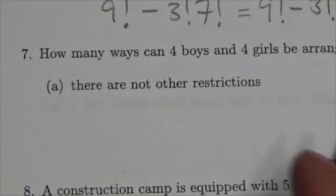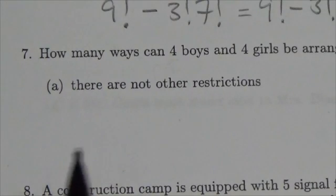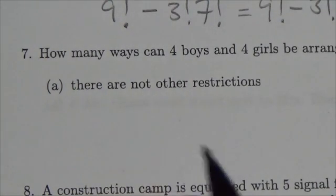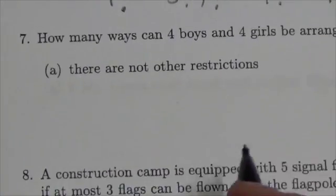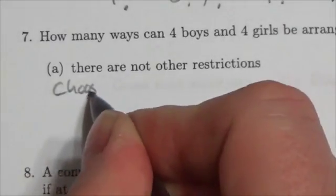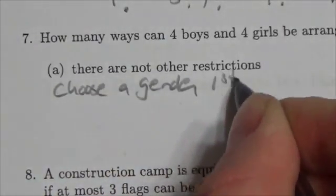Now if they have to alternate and we've got four boys and four girls, before we decide kind of the permutation there we got to figure out well what gender comes first. So we have to choose our gender first.